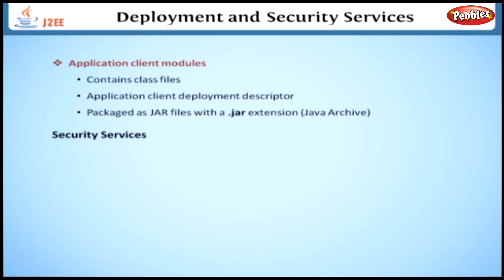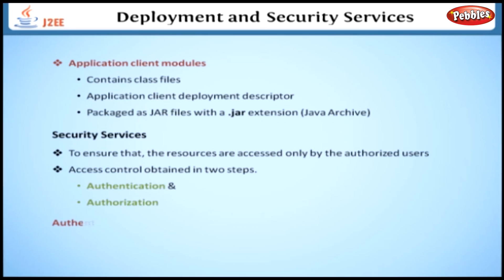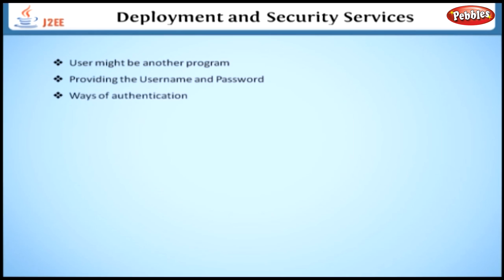Security Services. Java EE Platform Security Services are designed to ensure that the resources are accessed only by the authorized users. Normally, the access control is obtained in two steps: authentication and authorization. The purpose of authentication is to check the identity of a user — a user might be another program. We usually do this by providing the username and password.